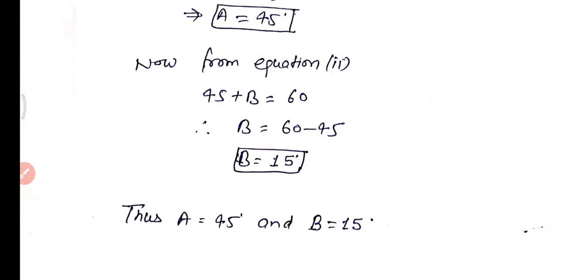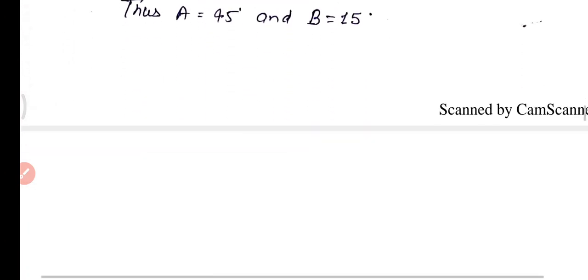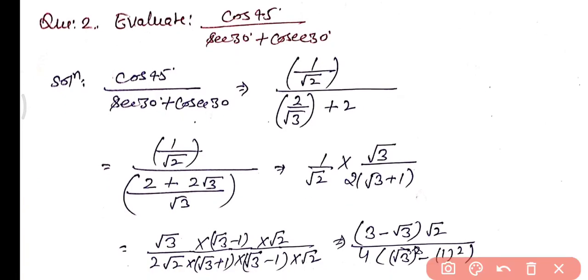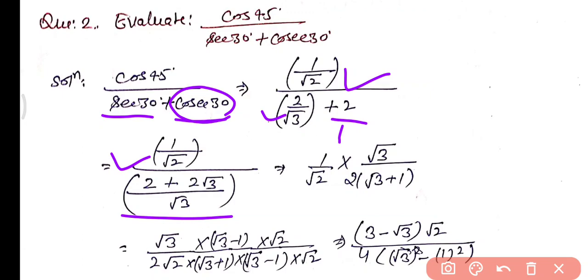Question 2: Evaluate cos 45 upon (sec 30 plus cos 30). Cos 45 from the table is 1 by root 2. Sec 30 is the reciprocal of cos 30, which is 2 by root 3. Cos 30 is root 3 by 2. Taking LCM in the denominator gives 2 plus root 3 upon root 3, so the expression becomes 1 by root 2 multiplied by root 3 upon (2 plus root 3), reciprocating the denominator.